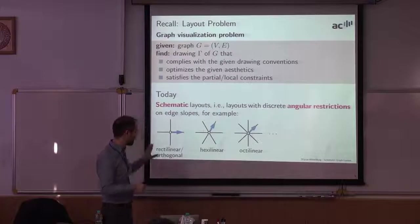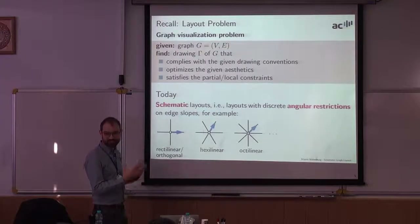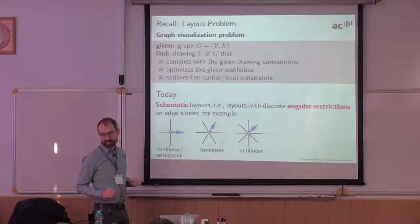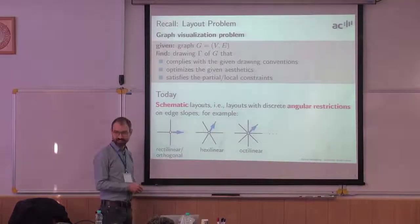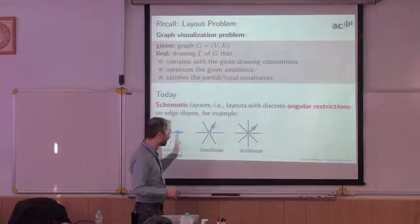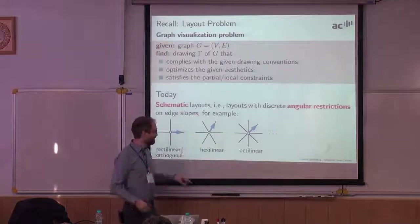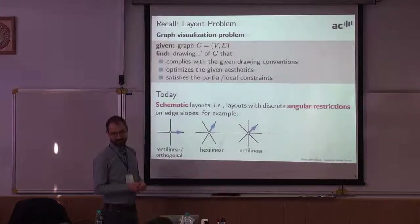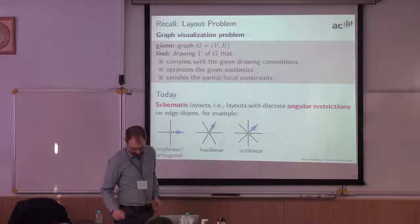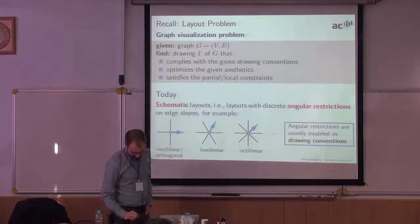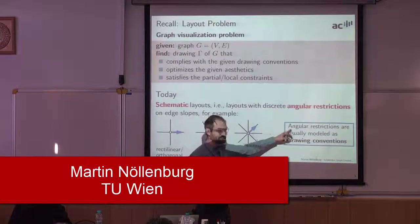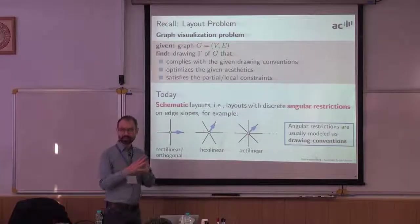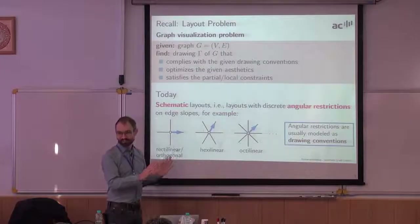What we are going to look at today is schematic layouts, meaning angular restrictions on the slopes of the edges. The most typical schematic angular systems are the rectilinear or orthogonal system, where you can only use horizontal and vertical edges, or maybe polylines consisting of orthogonal edges with a couple of bends. Angular restrictions like this are not something we optimize but something we give as a drawing convention.